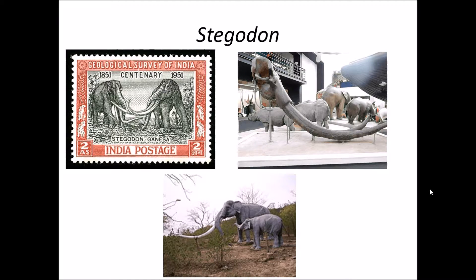The species recovered from the upper Shivalik is named after the Lord Ganesha, and we name it Stegodon Ganesha. Here you can see India's postal stamp, issued and recommended by the Geological Survey of India, which pictures the Stegodon Ganesha. This is the life-size model of Stegodon Ganesha in the Shivalik Fossil Park, Sukheti, Himachal Pradesh, India.